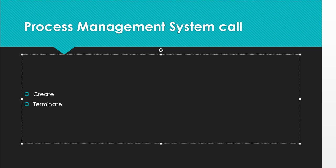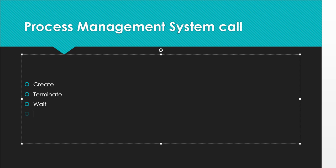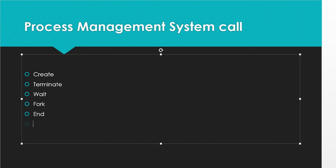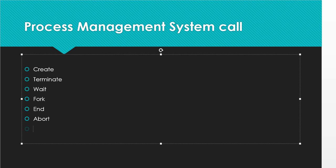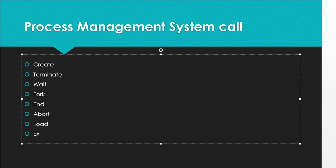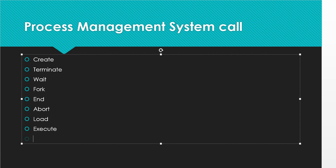Create means open a new software. Terminate means close an already open software. Wait is a system call that waits. Fork means create a child process, which will be explained later. Abort means forcefully close an opened process. Load means load into memory. Execute is also a system call.